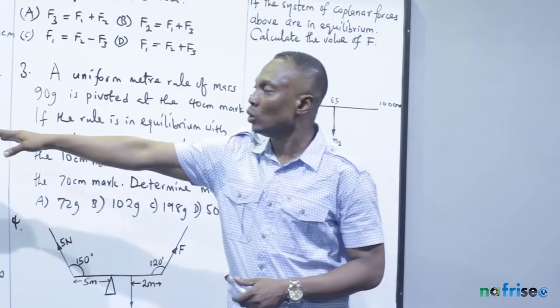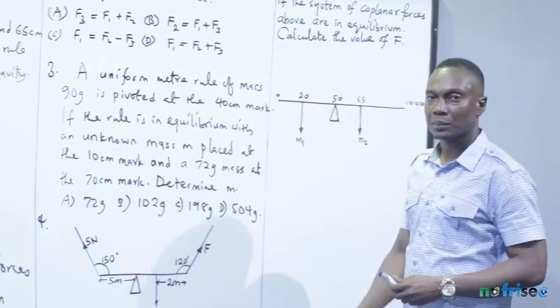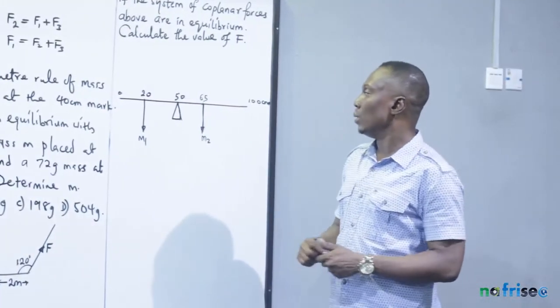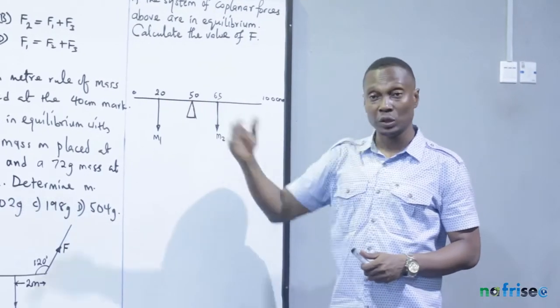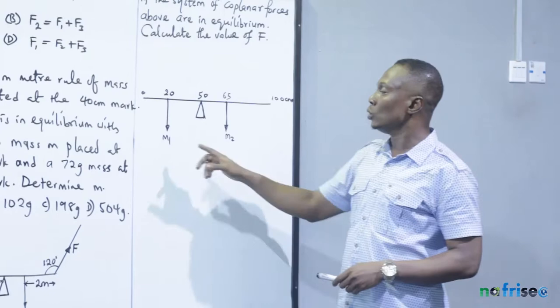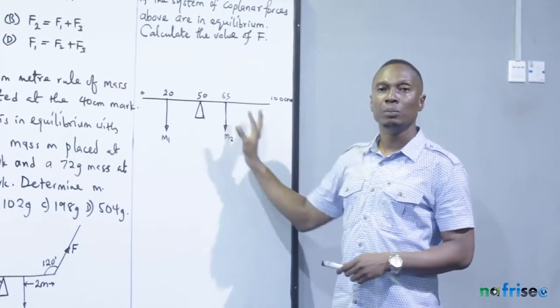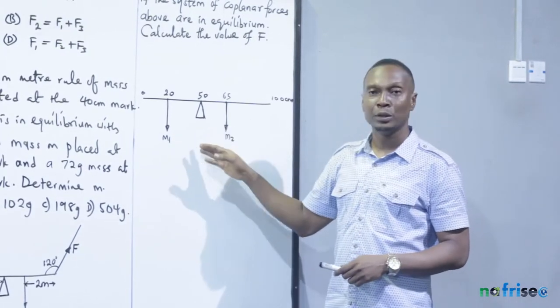For this ruler to be in balance as the question states, the sum of the moments about a particular point should be zero.